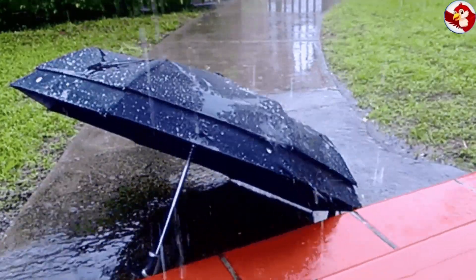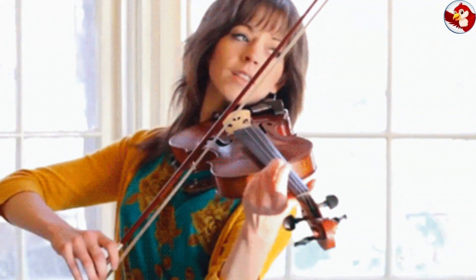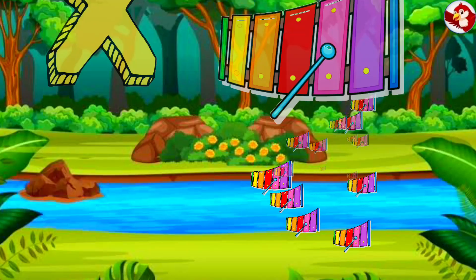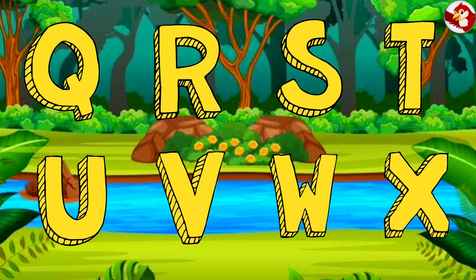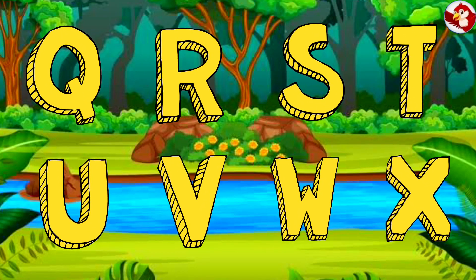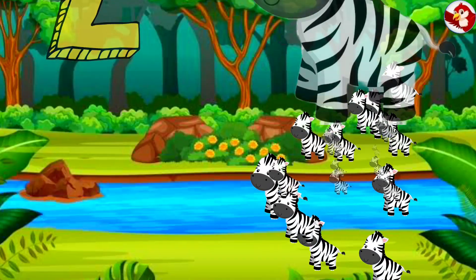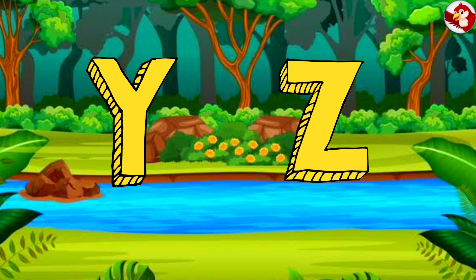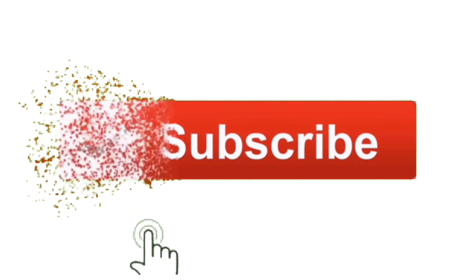U for Umbrella. V for Violin. W for Wagon. X for Xylophone. Y for Yellow. Z for Zebra. Thank you.